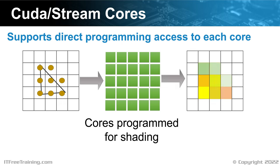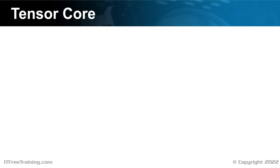Once the cores have finished processing, the results are outputted. A full 3D pipeline contains many different steps and shading is just one of them. Factors like lighting also need to be considered and textures applied. CUDA and stream cores provide a lot of flexibility, but there are also other specialized parts of the video card that improve performance.